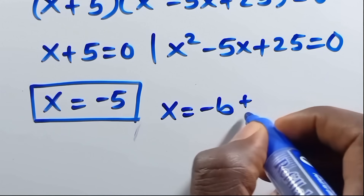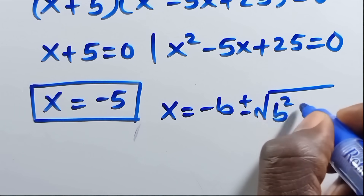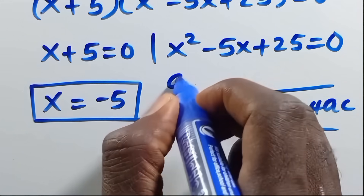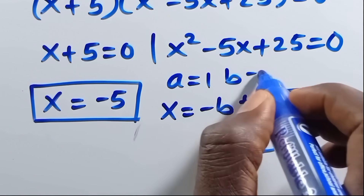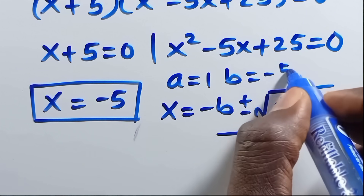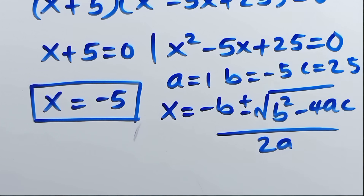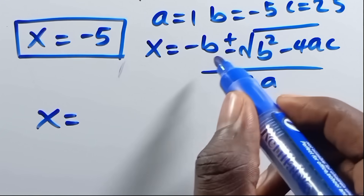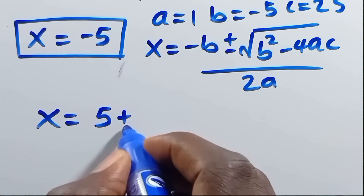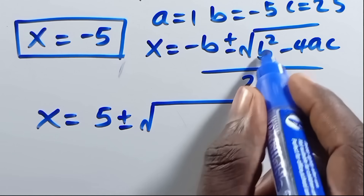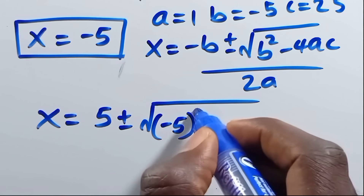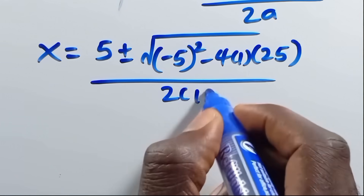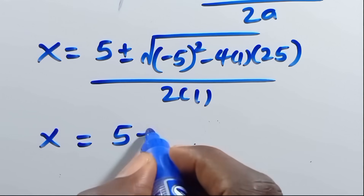From the second factor, using the quadratic formula: x equals negative b, plus or minus the square root of b squared minus 4ac, over 2a. The parameter a is the coefficient of x squared, which is 1; b is the coefficient of x, which is minus 5; and c is 25.